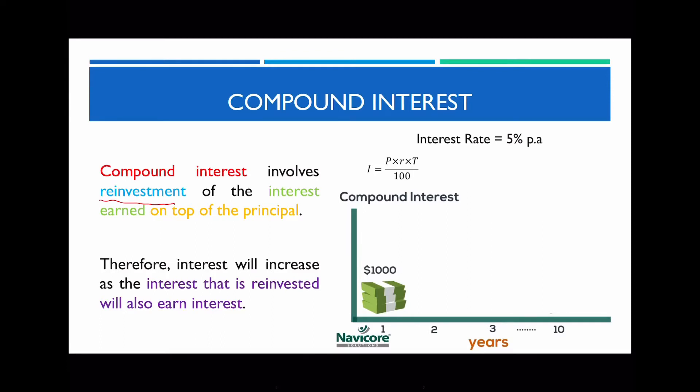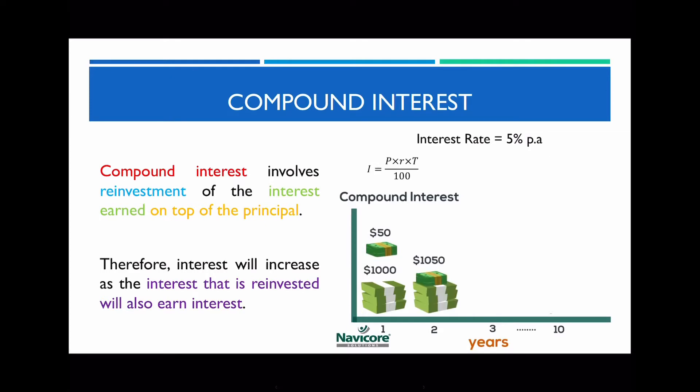Let's say in this example you are going to invest $1,000 with an interest rate of 5%. Using the simple interest formula, the amount of interest earned in one year is $50. So by the end of the first year you're going to have an extra $50, giving you $1,050 at the beginning of year two.